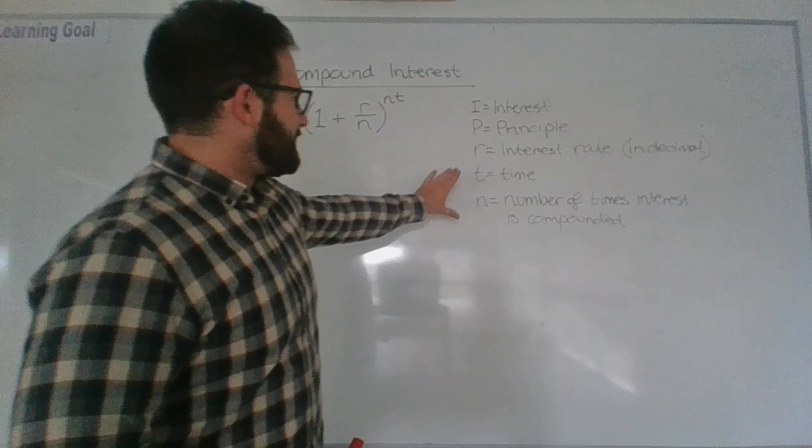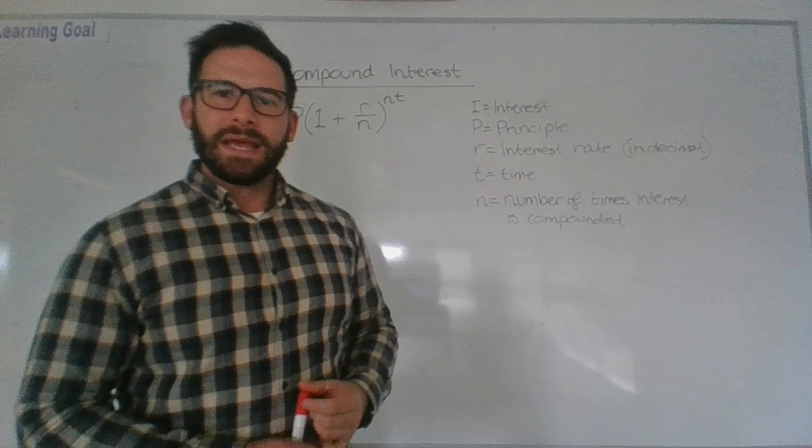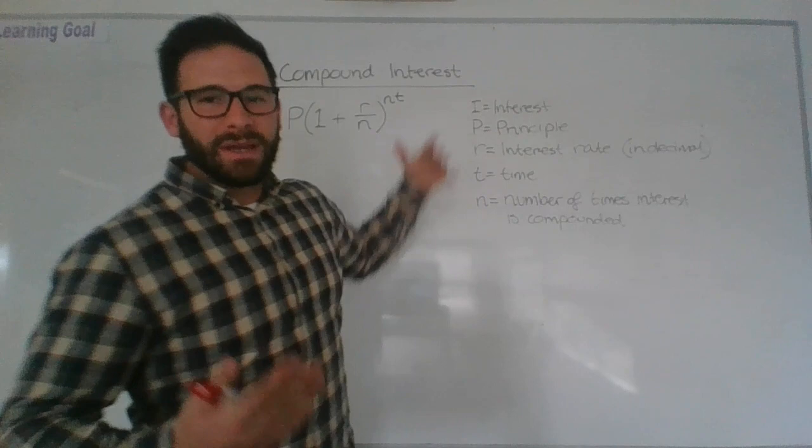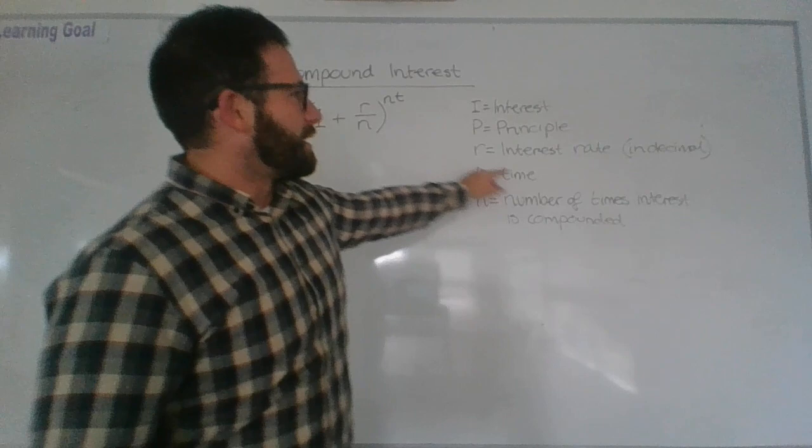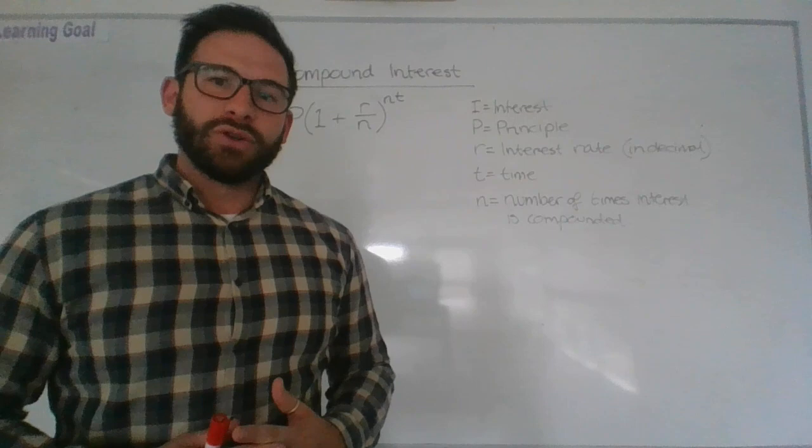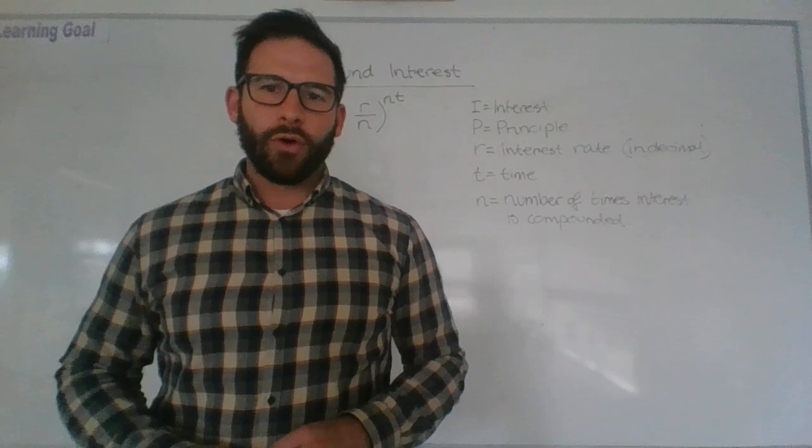So hopefully you guys are fairly comfortable with using it. What I need to speak to you about first is the difference between T time and n the number of times interest is compounded. The other things: how much interest is earned I, that value same as when we're doing simple interest, as is P the principal and R. Now again I've got here in decimal form, we need to make sure that whenever we're calculating anything to do with interest rates, so our rate, we do it in decimal form.